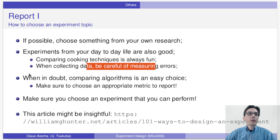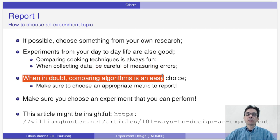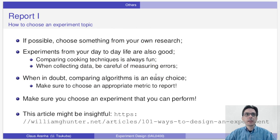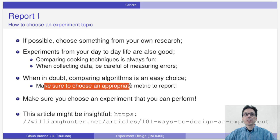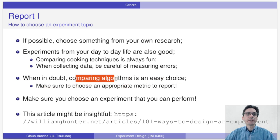When in doubt, comparing algorithms is always an easy choice. Just make sure you choose an appropriate metric, an appropriate variable to analyze. A common mistake is people comparing algorithms and choosing a variable that is not really relevant to the comparison.